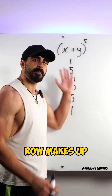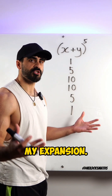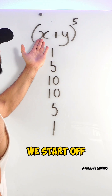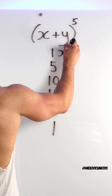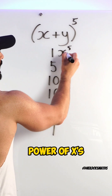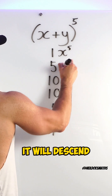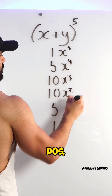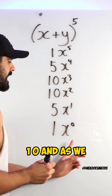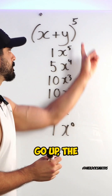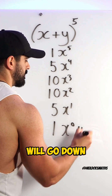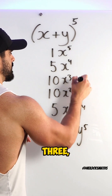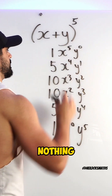Now the fifth row makes up the coefficients of my expansion. The trick here is that we start off with x to the power of five, and then the powers of x will go down — it will descend: four, three, two, one, zero. And as we go up, the powers of y will go up: five, four, three, two, one, nothing.